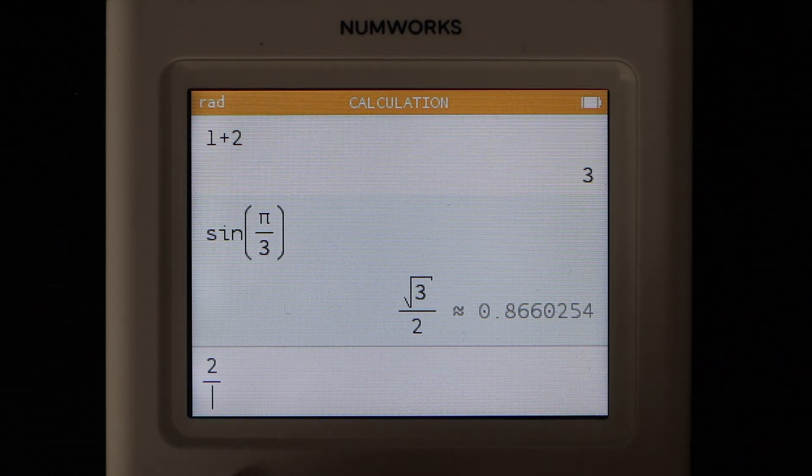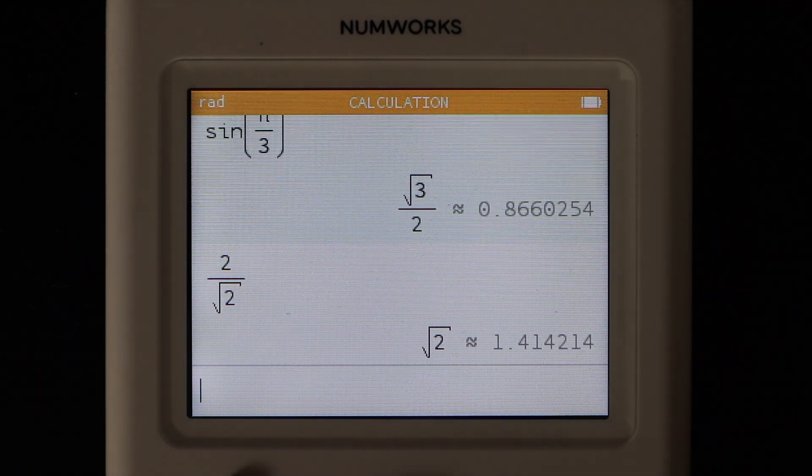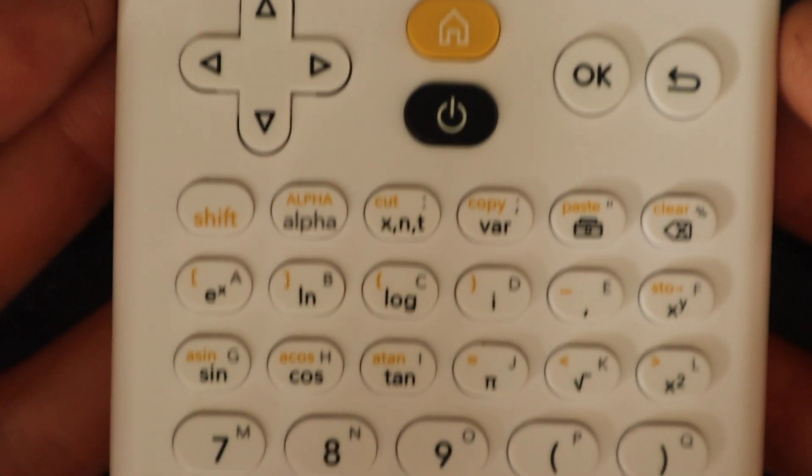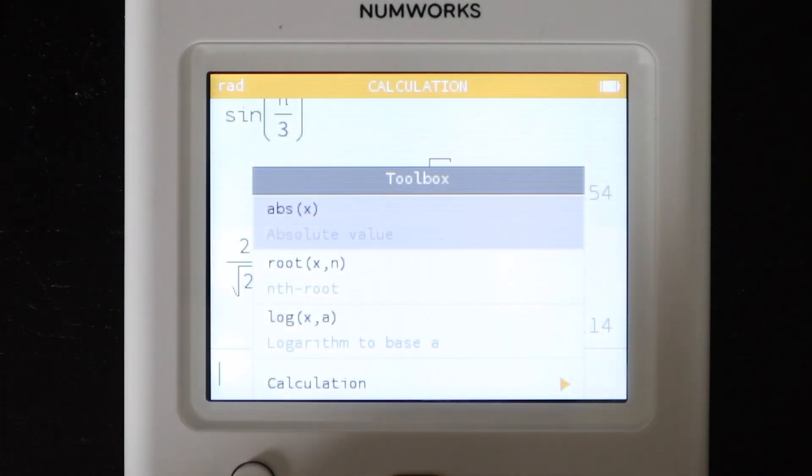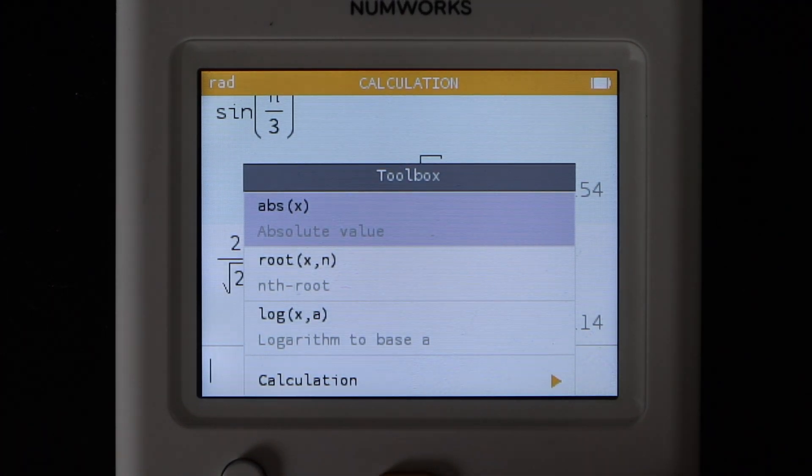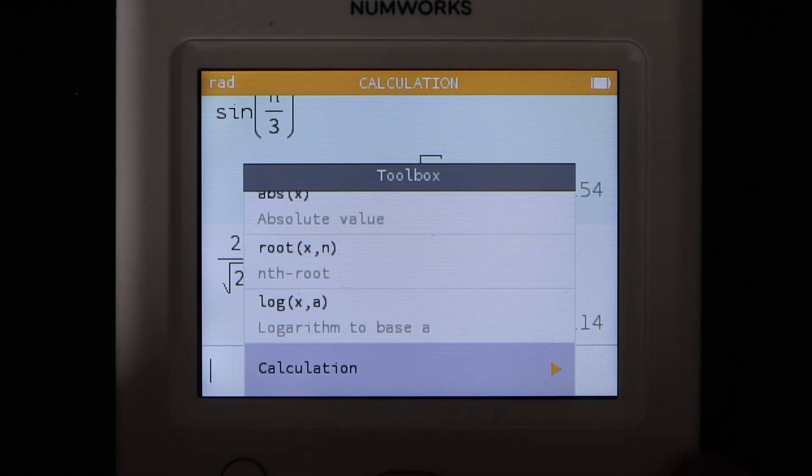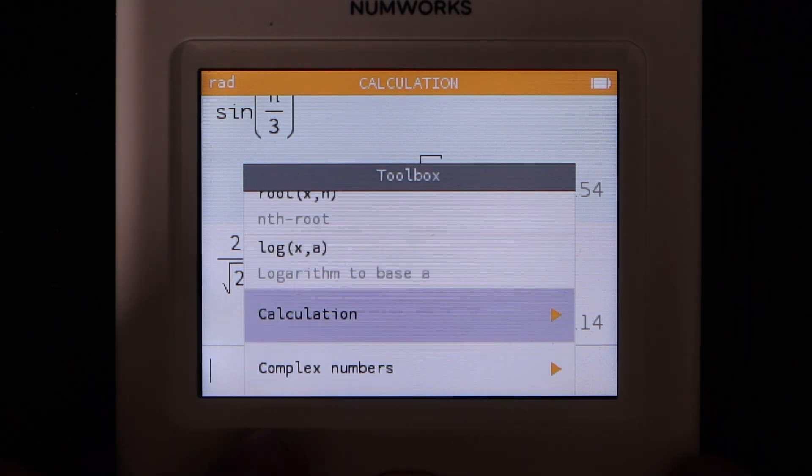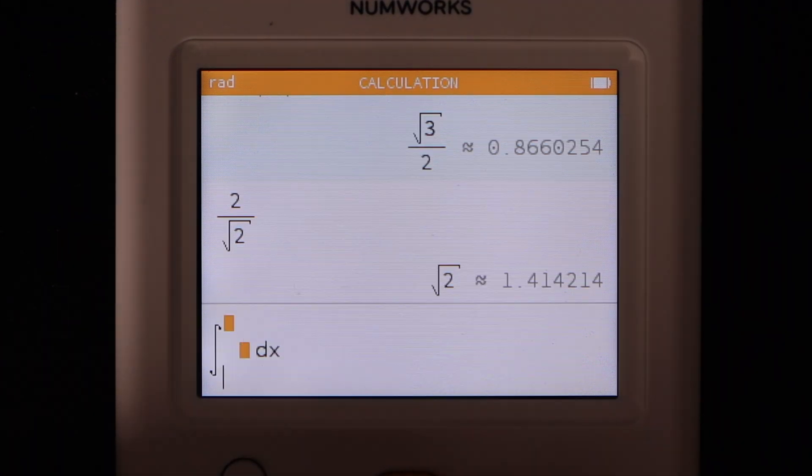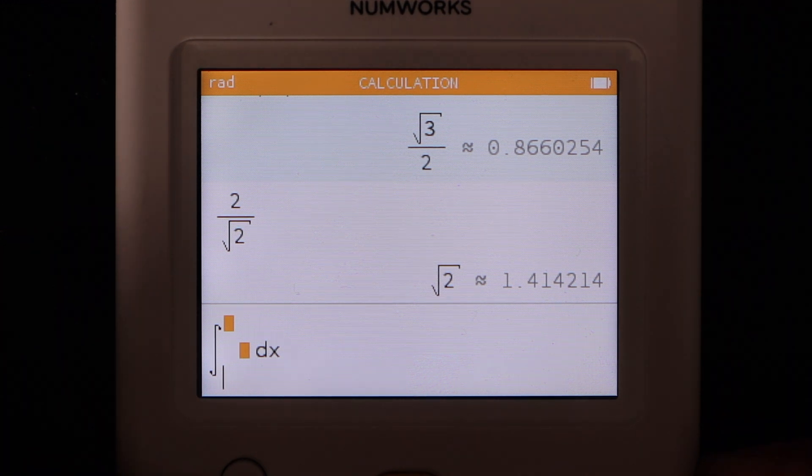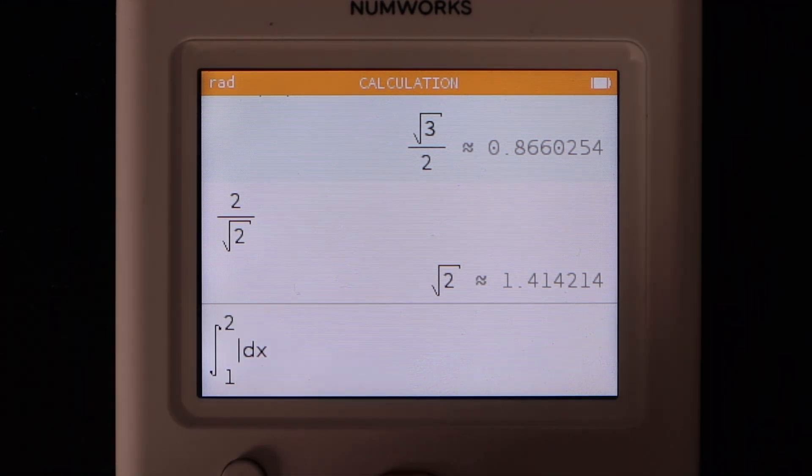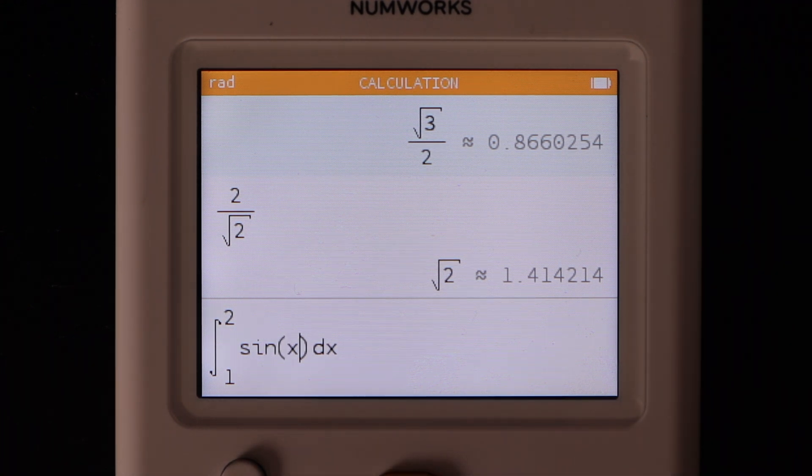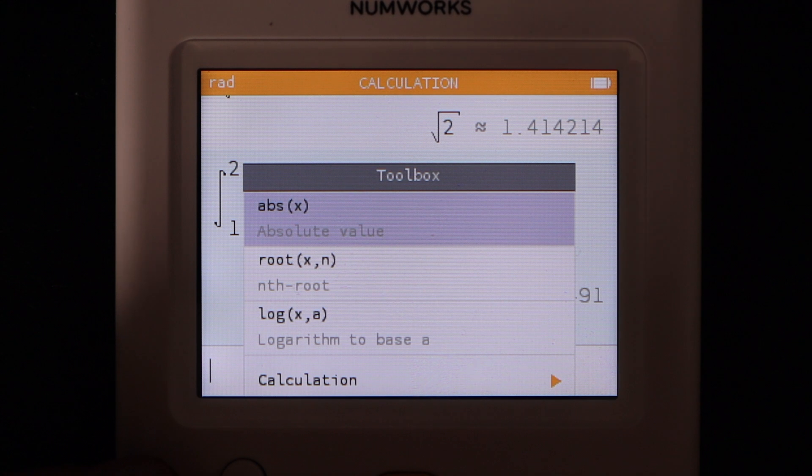Besides what comes up on the keypad here, if you press this button for the toolbox, this is kind of like the math menu on a lot of other Texas Instruments calculators. You'll get this menu here and you can scroll through and find the functions that you want. There's quite a few including derivatives and integrals. Obviously, once again, this is not a CAS calculator so any integrals you do will have to be definite integrals. There's no solving indefinite integrals with this calculator.